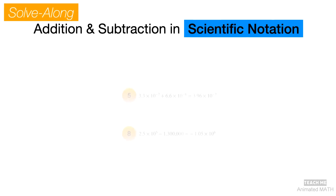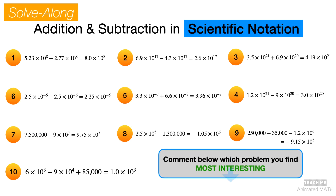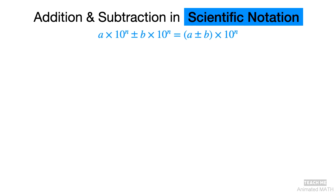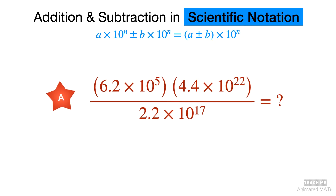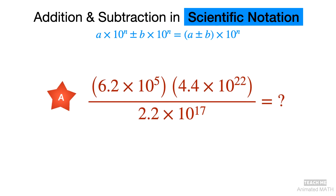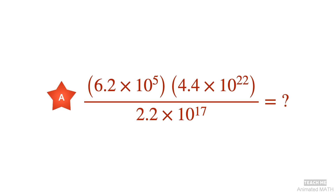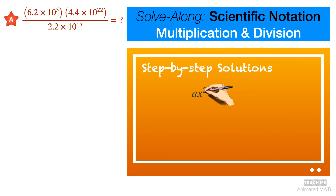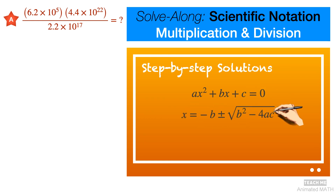We want to know more about your experience with math, so comment below which problem you find most interesting and let us know why. Now that you understand how to do addition and subtraction in scientific notation and recognize some common mistakes, it's time for a little exercise — can you try solving this on your own? Comment your answer below. We will be revealing the answer and step-by-step solution in our next solve-along video, which will be about how to multiply and divide numbers in scientific notation. Be sure to subscribe to Teach Me Animated Math and don't miss out! See you next time!